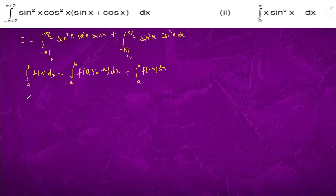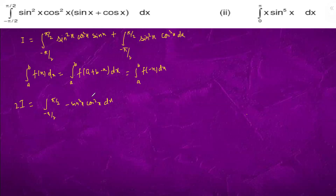So we will have the same I. Sine of minus x whole square will be sine square x, and this will come out to be minus sine x. So when we add 2I, from minus pi by 2 to pi by 2, this will come out to be minus sine cube x times cos square x dx.